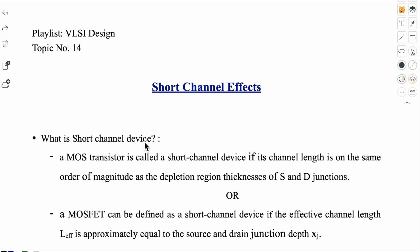Let's see what is the short channel device when we say that this MOS transistor is a short channel device. We can define it in two ways. First, a MOS transistor is called a short channel device if its channel length is on the same order of magnitude as the depletion region thickness of source and drain junctions. Second, a MOSFET can be defined as a short channel device if the effective channel length is approximately equal to the source drain junction depth.